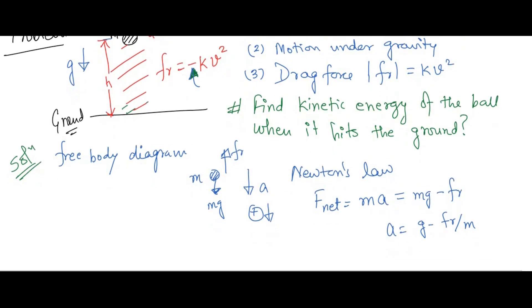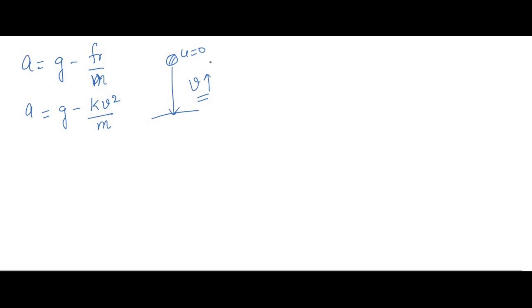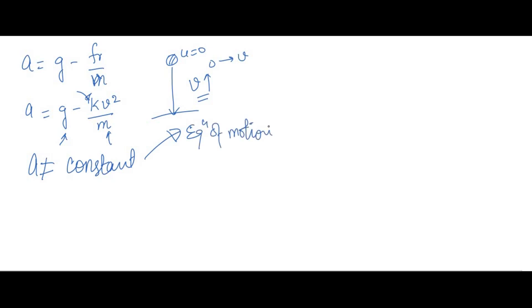According to Newton's law, taking downward as positive: F_net = ma, which gives mg minus F_drag. So acceleration a = g minus kv²/m. At the initial point the velocity was zero, and as height decreases, velocity increases. Since velocity is not constant, k and m are constants but v changes, so the acceleration is also not constant. Therefore, the standard three equations of motion (valid when a = constant) cannot be used here.